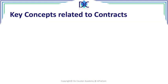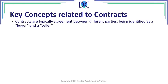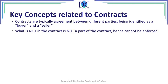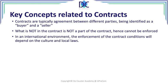When we look at key concepts specifically related to contracts, a contract must include the different parties, typically identified as a buyer and a seller. It's very important to understand that what is not in the contract is not part of the contract and cannot be enforced. So when something is not written in the contract, it means it's not there and doesn't have to be done — it should have been written in the contract.